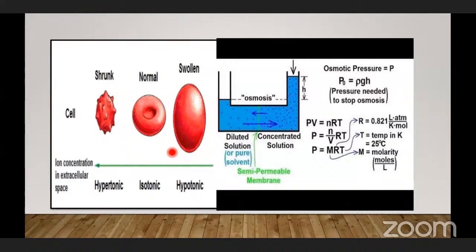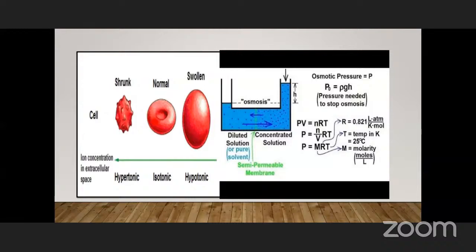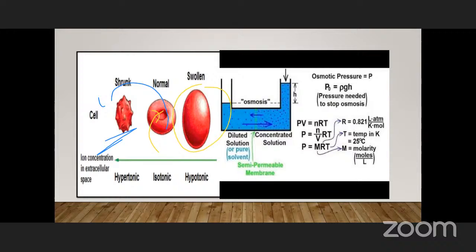This is important because whenever we take a cell and keep it in a solution, the solution can have more or less concentration compared to the liquid inside the cell. This is the normal cell. When a cell is put in a hypertonic solution — where concentration is more and solvent is lesser — water moves out of the cell into the solution, causing the cell to dehydrate and shrink. When the cell is put in a hypotonic solution, water enters the cell and the cell bulges and swells.